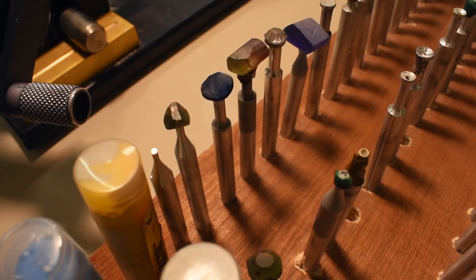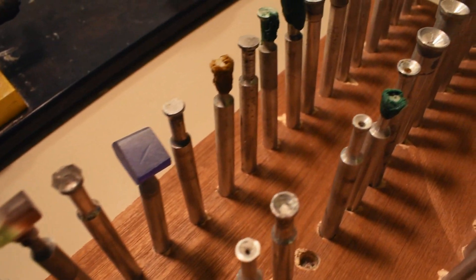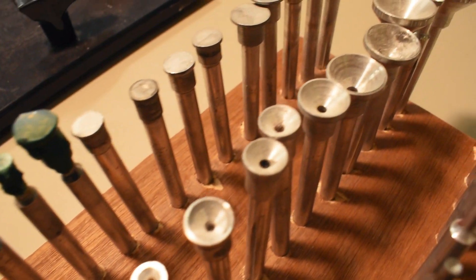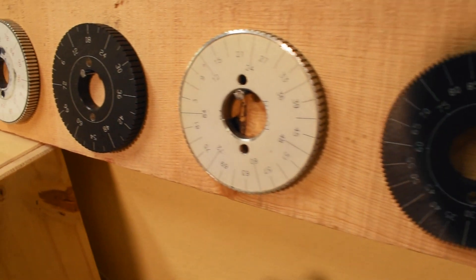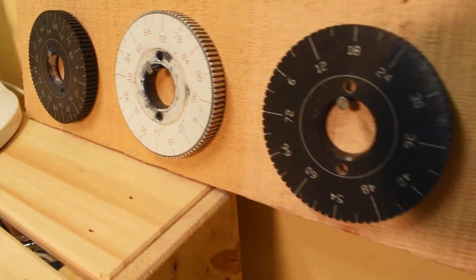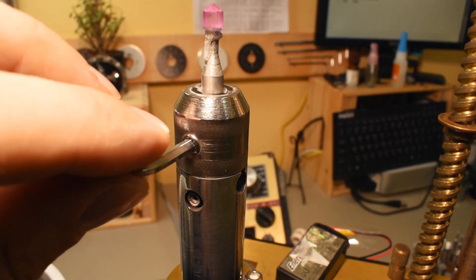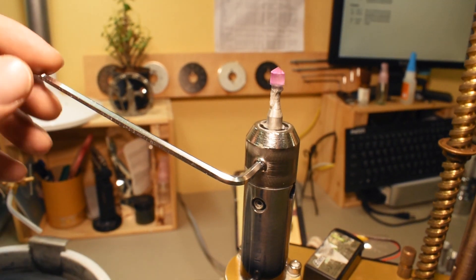The machine comes with a variety of dops in different sizes, and the company also sells a variety of different index wheels for cutting stones with unusual geometry. To remove your stone, simply use the included allen wrench to unlock the dop from the quill.